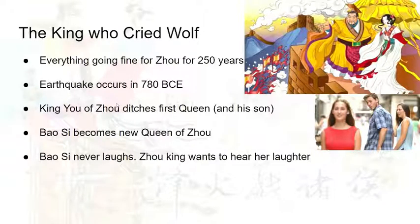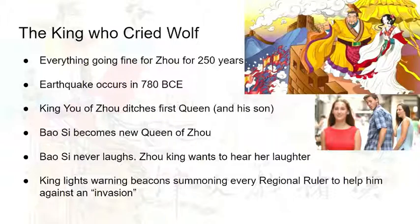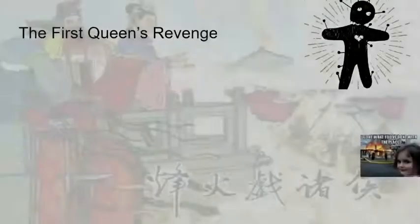The thing about Bao Si was that she was a very serious person — she never laughed. The Zhou king wanted to hear her laughter by any means necessary. So what the king does is he lights warning beacons, summoning every regional ruler to help him against a supposed invasion. It's actually a troll job — there was no invasion. He essentially made a fool out of every single regional ruler who came to his aid. As a result, Bao Si laughs, either because it was hubris, or because it was sad, or maybe both.